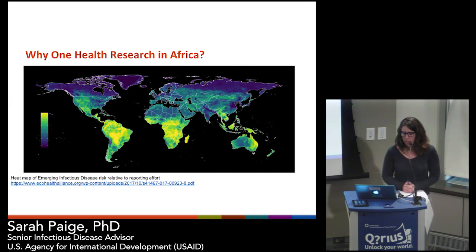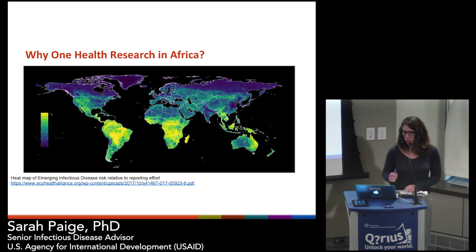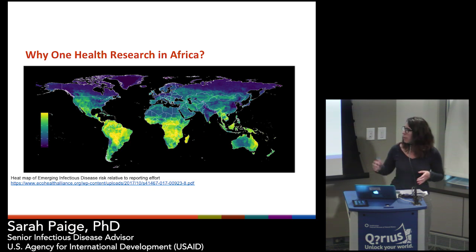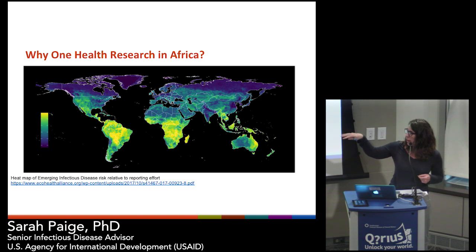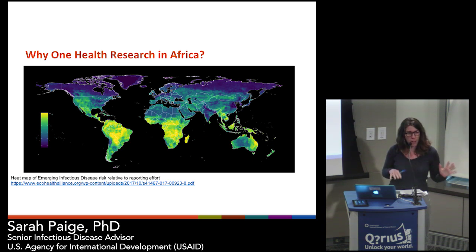Why One Health research in Africa? A 2017 updated hotspot analysis shows a heat map of emerging infectious diseases relative to reporting capacity. What we've discovered is that emerging diseases — AMR, influenza, SARS — can occur anywhere in the world, but where capacity to report and respond is lowest is where we have the most concern, and that tends to be in sub-Saharan Africa and parts of central and northern South America. Part of our focus on Africa is also our interest in these charismatic species.